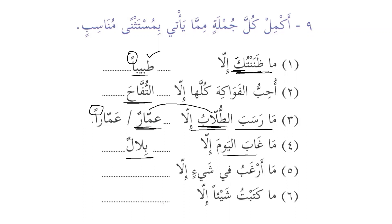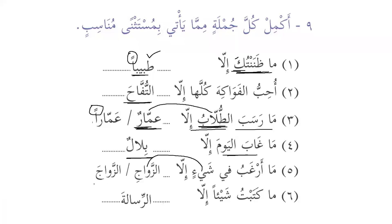'Ma arghabu fi shayyin illa al-zawaj / al-zawaji' — I'm not interested in anything except for marriage. Two case endings: al-zawaji as badal of 'shayyin,' and al-zawaja as mansoob. 'Ma katabtu shayyan illa al-risalata' — I didn't write anything except for the message. They are not connected — munqatiyun — so it is always mansoob.